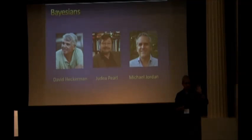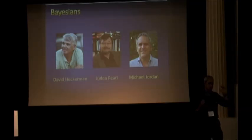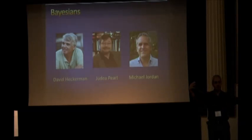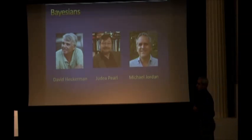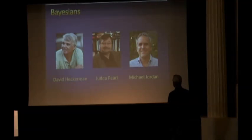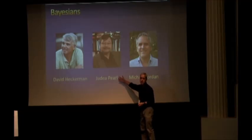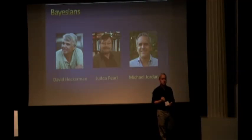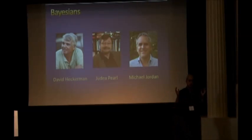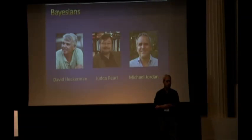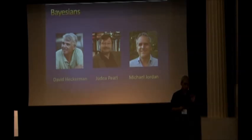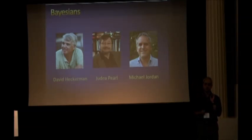Now the Bayesians. They come from a very different origin — statistics. One of the things that makes machine learning fun is that the algorithms all come from different disciplines: logic, philosophy, neuroscience, evolutionary biology, and now statistics. The most famous Bayesian within computer science is probably Judea Pearl, who invented Bayesian networks and won the Turing Award — the Nobel Prize of computer science — for that. David Heckerman and Mike Jordan are two other very famous Bayesians. The Bayesians of all the machine learning tribes are probably the most fanatical — they have a real religious devotion to their paradigm.